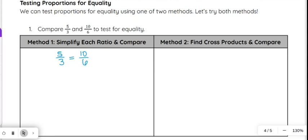So the first way is to simplify each ratio and compare. So 5 over 3. 5 and 3 are not divisible by the same number other than 1. So 5 over 3 is the simplified version. 10 and 6 are both even. So they can both be divided by 2 here and here. 10 divided by 2 is 5. 6 divided by 2 is 3. And then you're asking yourself, are these actually equal once they are each simplified? And yes, they are equal. So that means that 5 over 3 equals 10 over 6 is a true proportion, meaning they are actually equivalent.